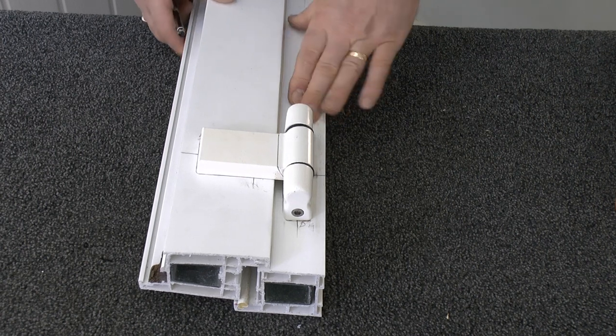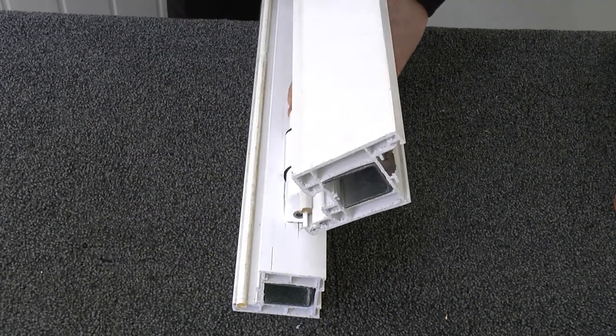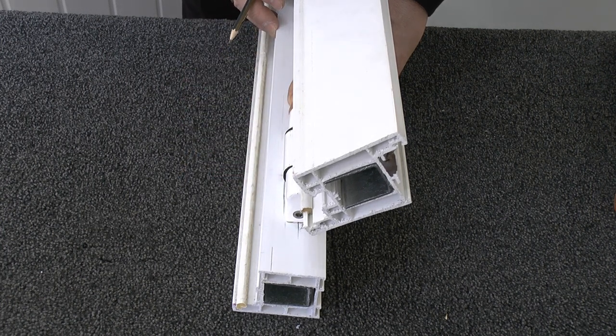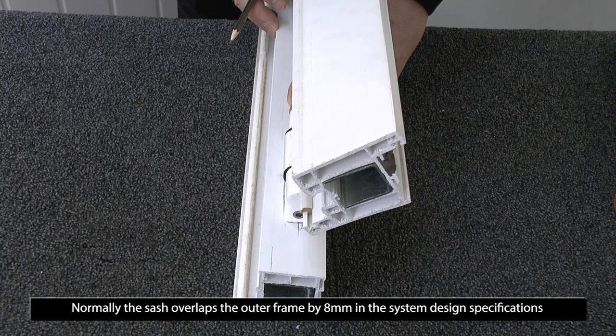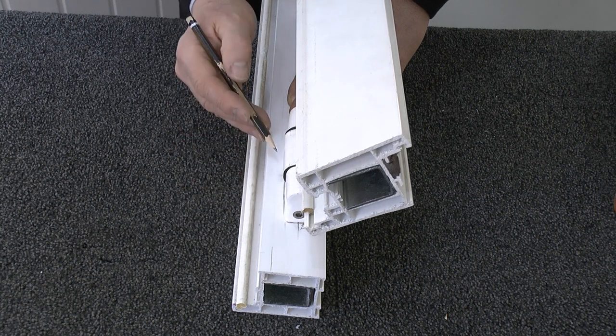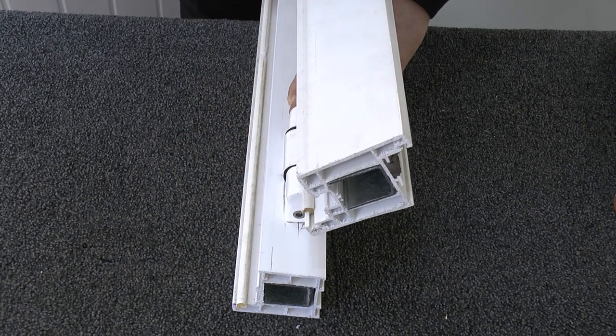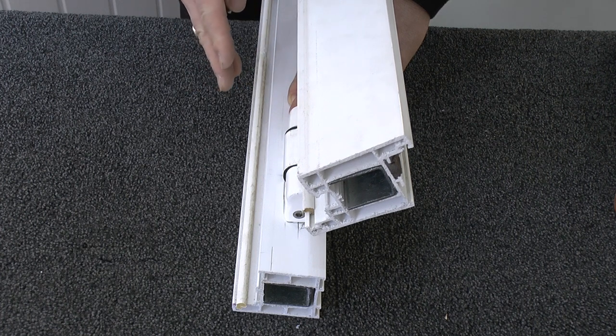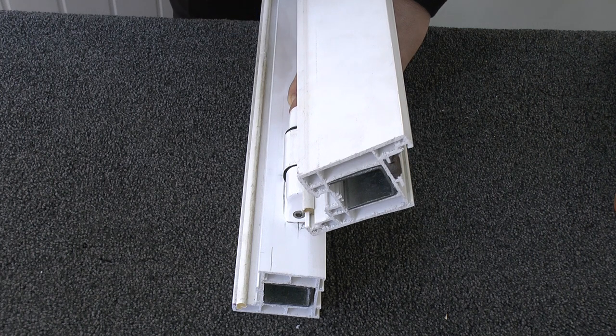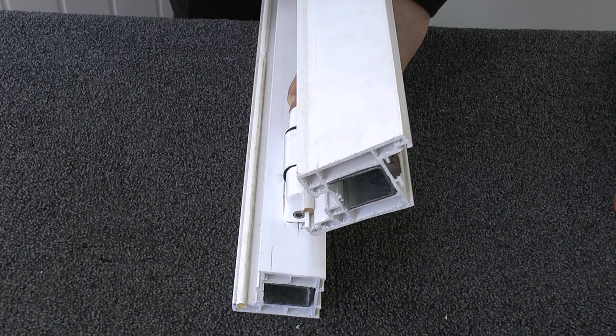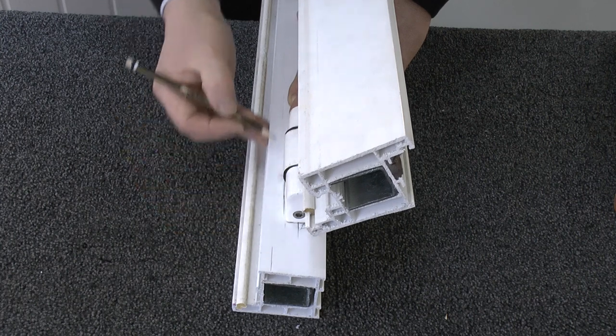Before you start dismantling any hinges, run a pencil mark down the back of the door opener before you open it. Then open the door and identify that that distance there is either eight or nine millimeters. You must do that to all positions in front of each hinge to identify whether the hinges are in the correct place or not.